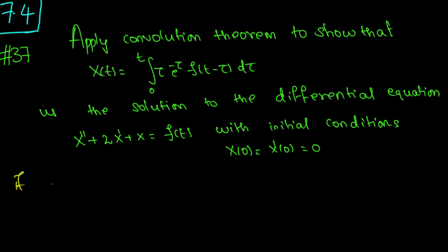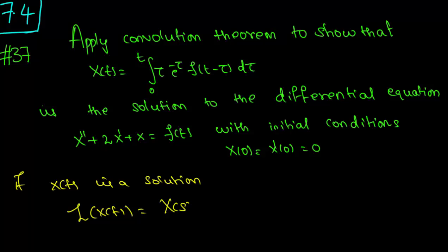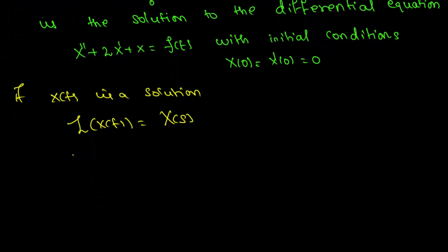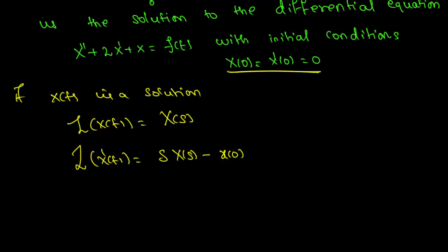So if x of t is a solution, the Laplace transform of x of t is capital X of s. We know that the Laplace of x prime of t is s times X of s minus x of 0. We need the solution such that the initial conditions are zero: x of 0 is 0 and x prime of 0 is 0.